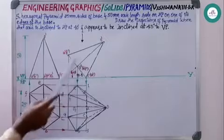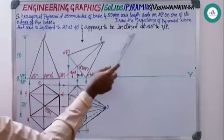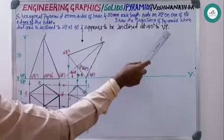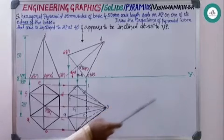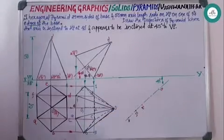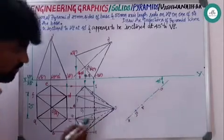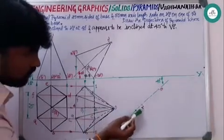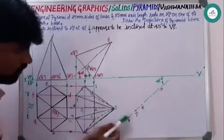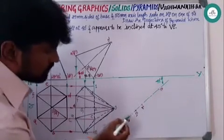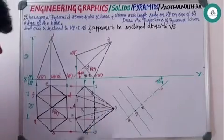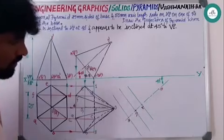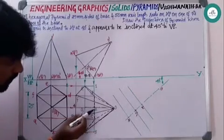It appears to be inclined at 45 degrees to VP. Since appearance is given, this is a non-beta case. Draw a line at 45 degrees. After drawing this 45-degree line, meet the point from O1 to O1 to 2 and O1 to 4. Then draw 90-degree lines.